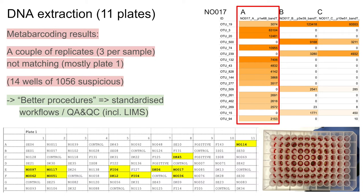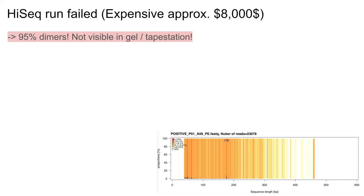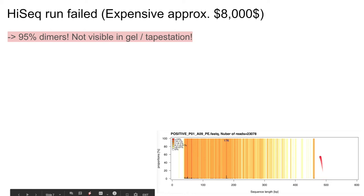From here on out, the lab work was completed without any further issues and we were excited to get some sequencing data back. However, the worst possible thing happened — the sequencing run completely failed. We had an issue with dimers, so 95% of the reads were dimers, which you can see in the histogram. The length of the DNA fragments is very, very short, and we usually would expect over 90% of sequences to be in the expected range. That's $8,000 down the drain.